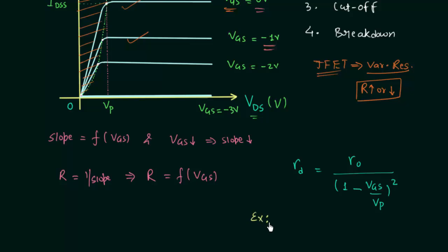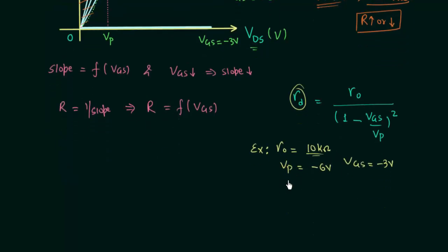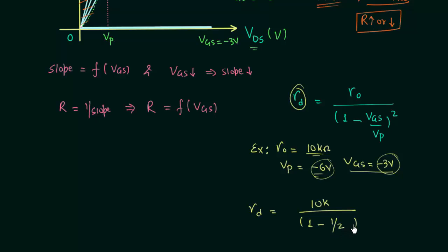Let's solve an example. RO is equal to 10 kilohms, VP is equal to minus 6 volts, and VGS is equal to minus 3 volts. We need to calculate RD. RD equals 10 kilohms divided by 1 minus (minus 3 divided by minus 6) squared, which equals 1 divided by (1 minus 1/2) squared. Solving this gives RD equal to 40 kilohms.